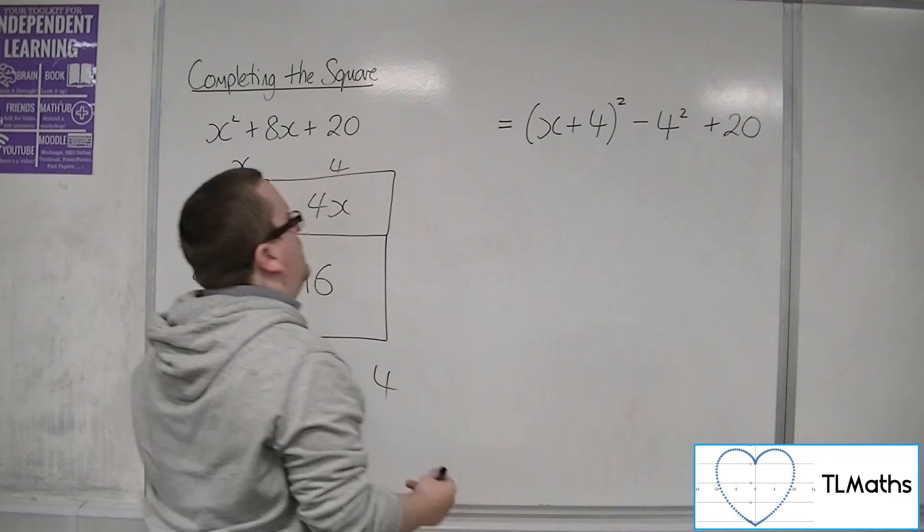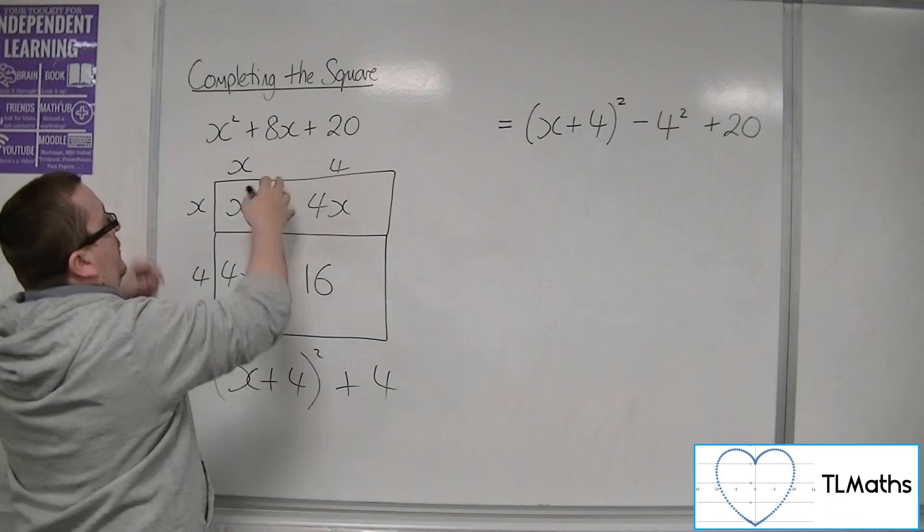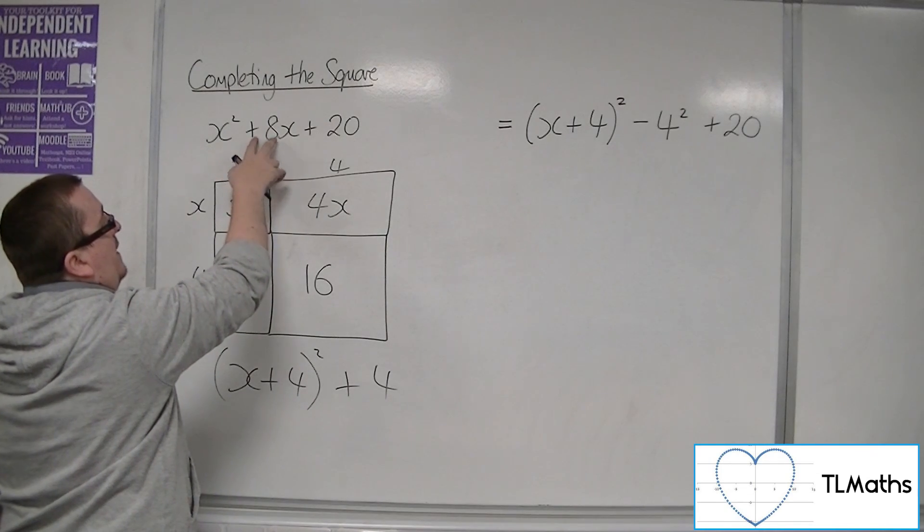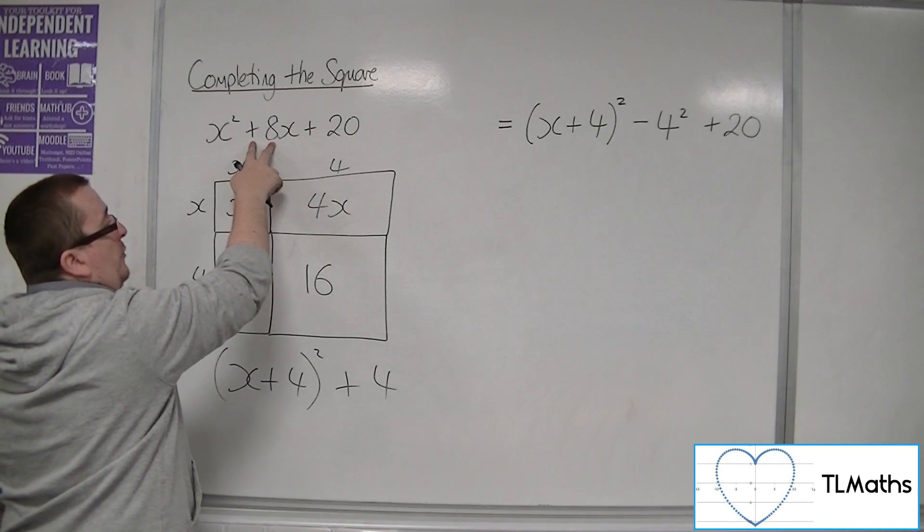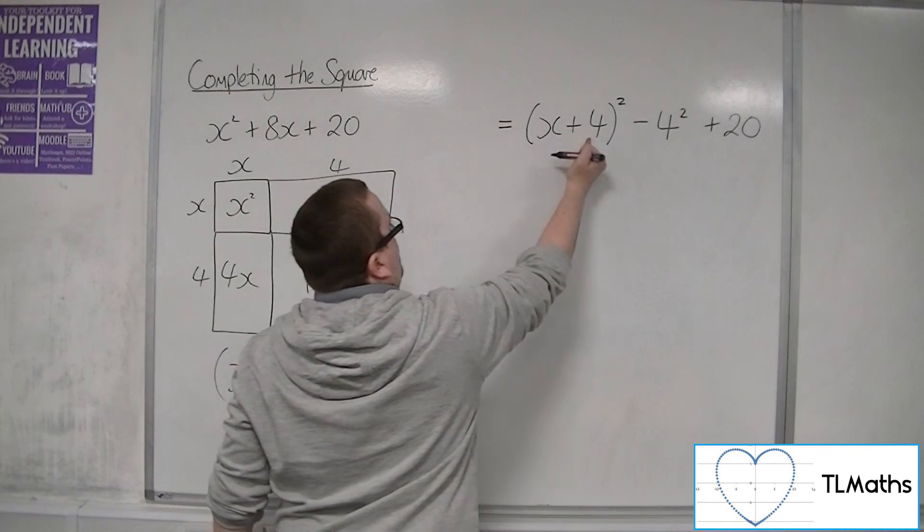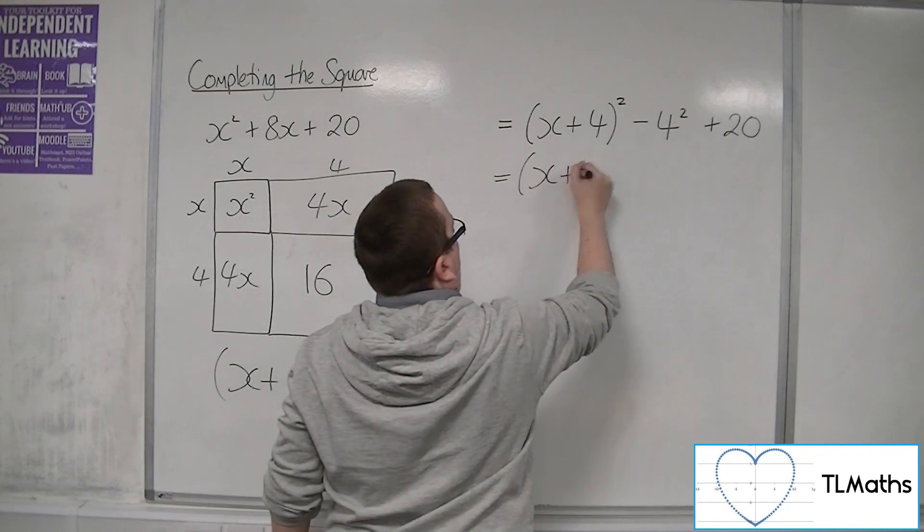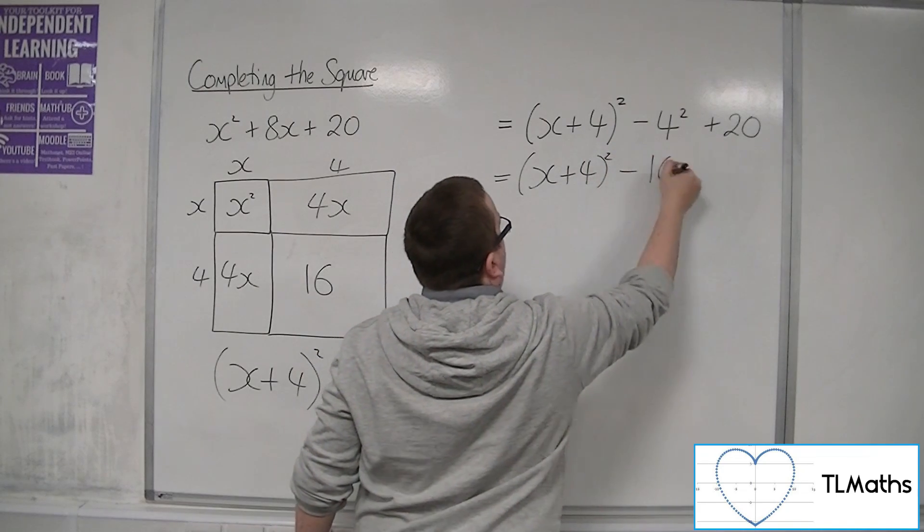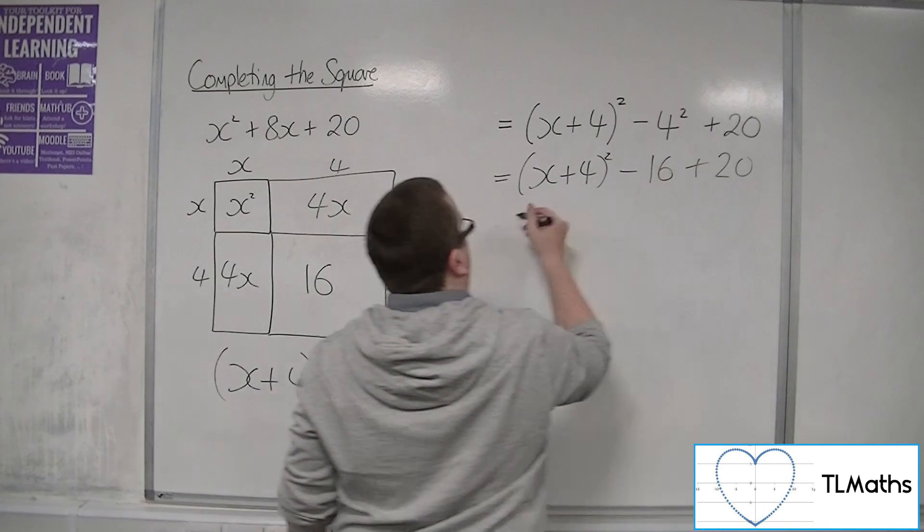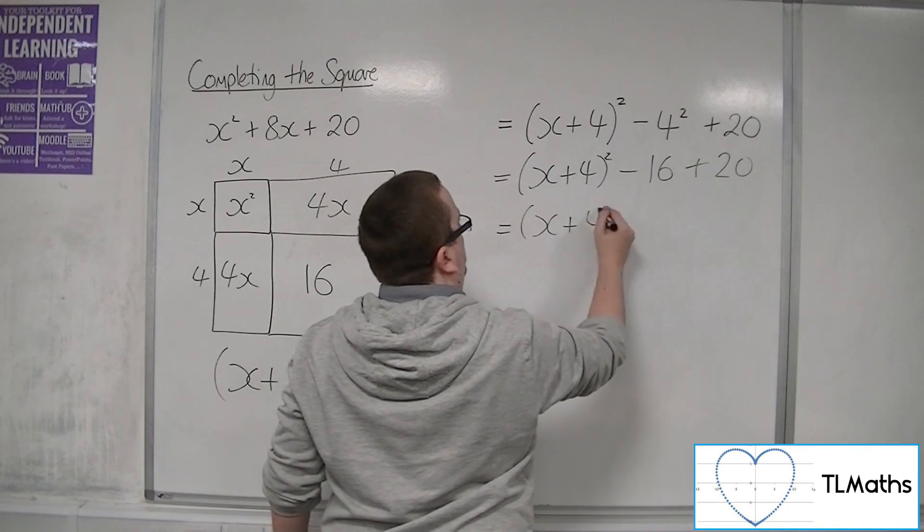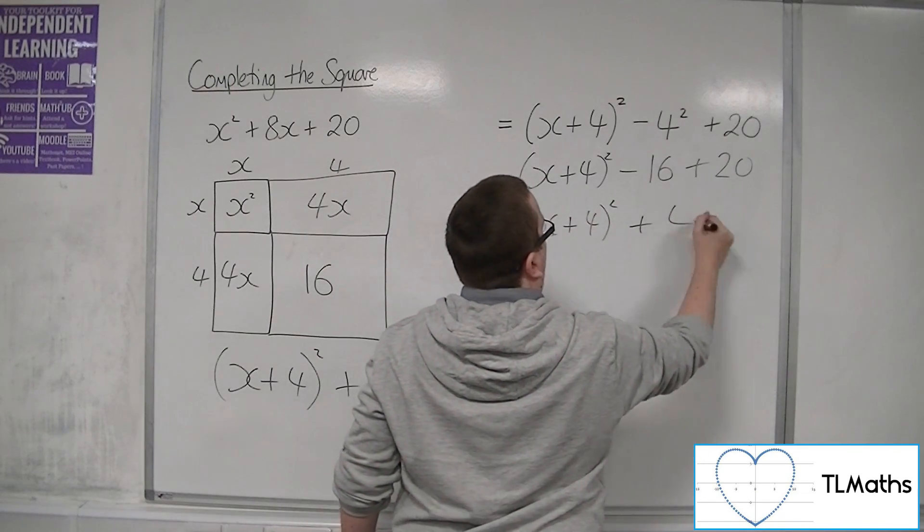So I write x plus half of that value there, that coefficient, so x plus 4 squared, take away 4 squared plus the 20. So I've got x plus 4 squared minus 16 plus 20, which gives us the x plus 4 squared plus 4.